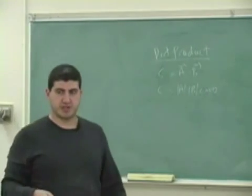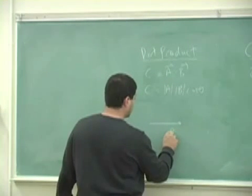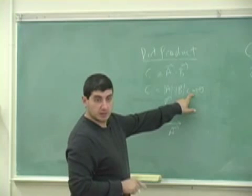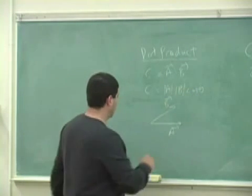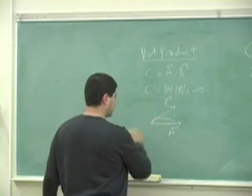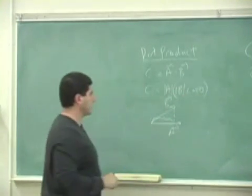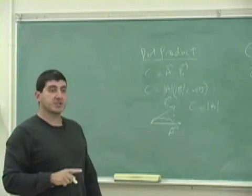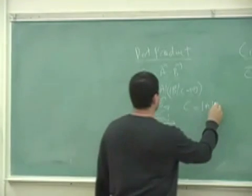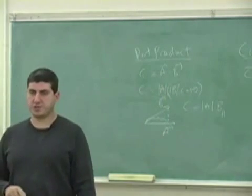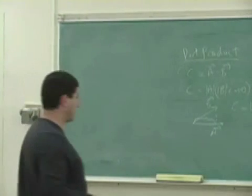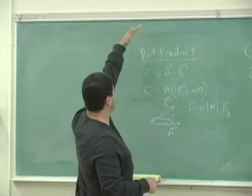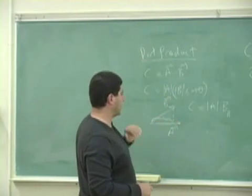The dot product also has a geometrical meaning. If this is vector A and this is vector B, then B cosine theta is the projection of B onto A. So the dot product is the magnitude of A times the projection of vector B onto A — the parallel component of B onto A. Almost think of it as the shadow of B: if the sun was up there, the shadow of B onto A times the magnitude of A gives you the dot product.